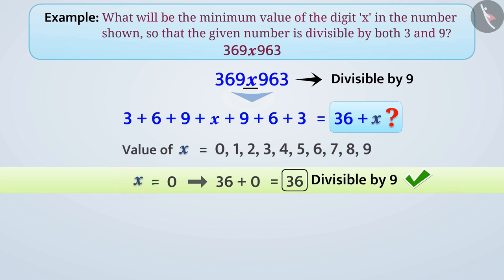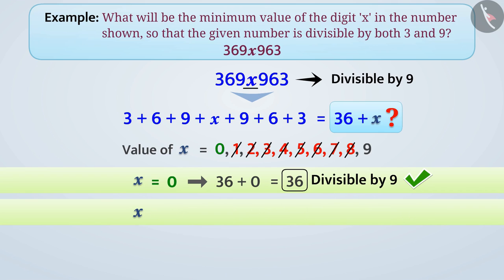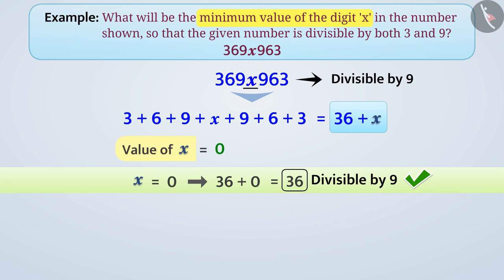If we take the value of x as 1, we get sum 37, which is not divisible by 9. Therefore, we cannot take x as 1. Similarly, we cannot take x as 2, 3, 4, 5, 6, 7, or 8. When we take the value of x as 9, we get 36 plus 9 equal to 45, which is divisible by 9. So x can also be 9. But we need the minimum value of x, so we take x equal to 0.